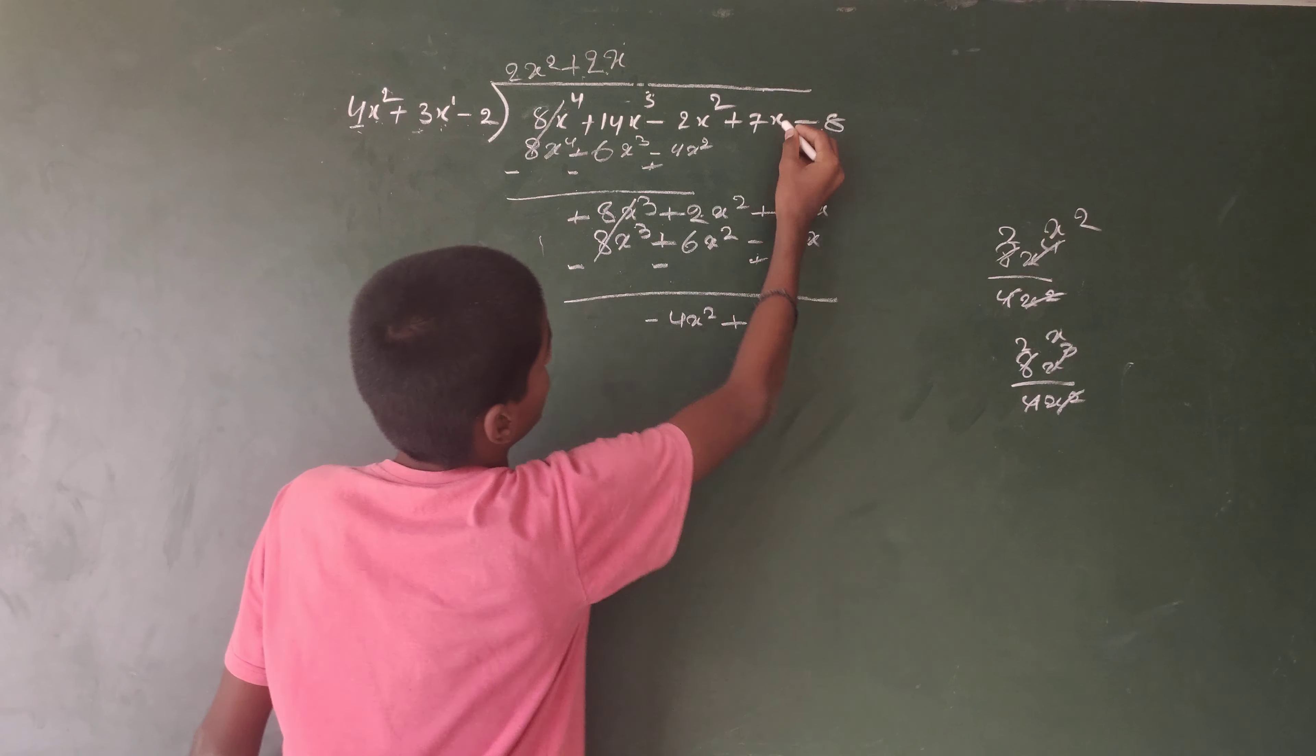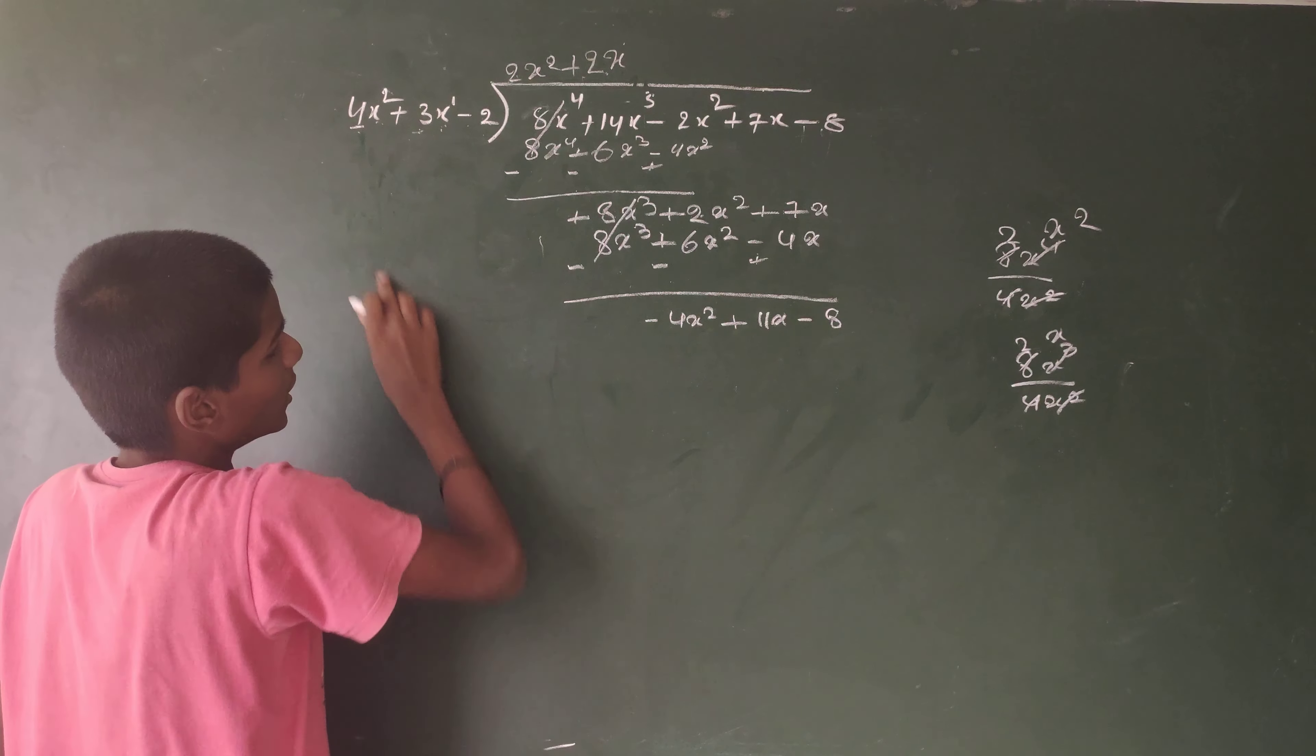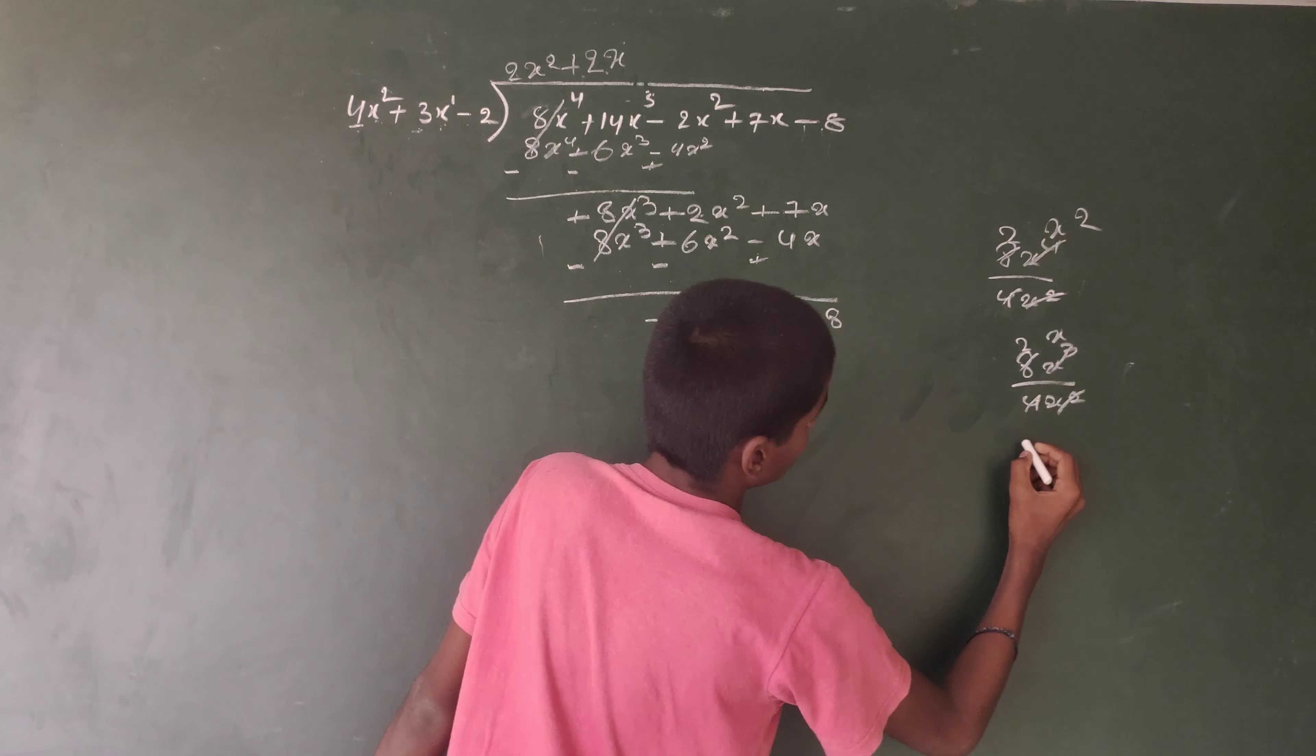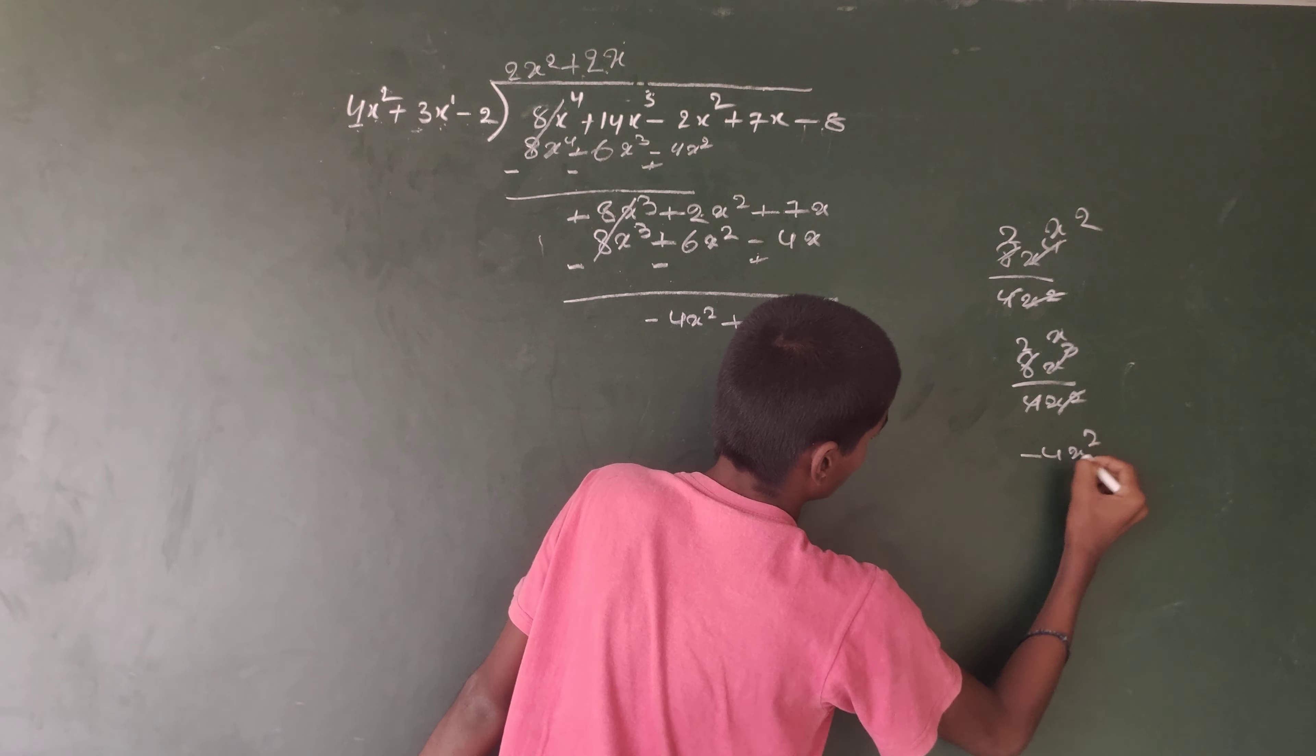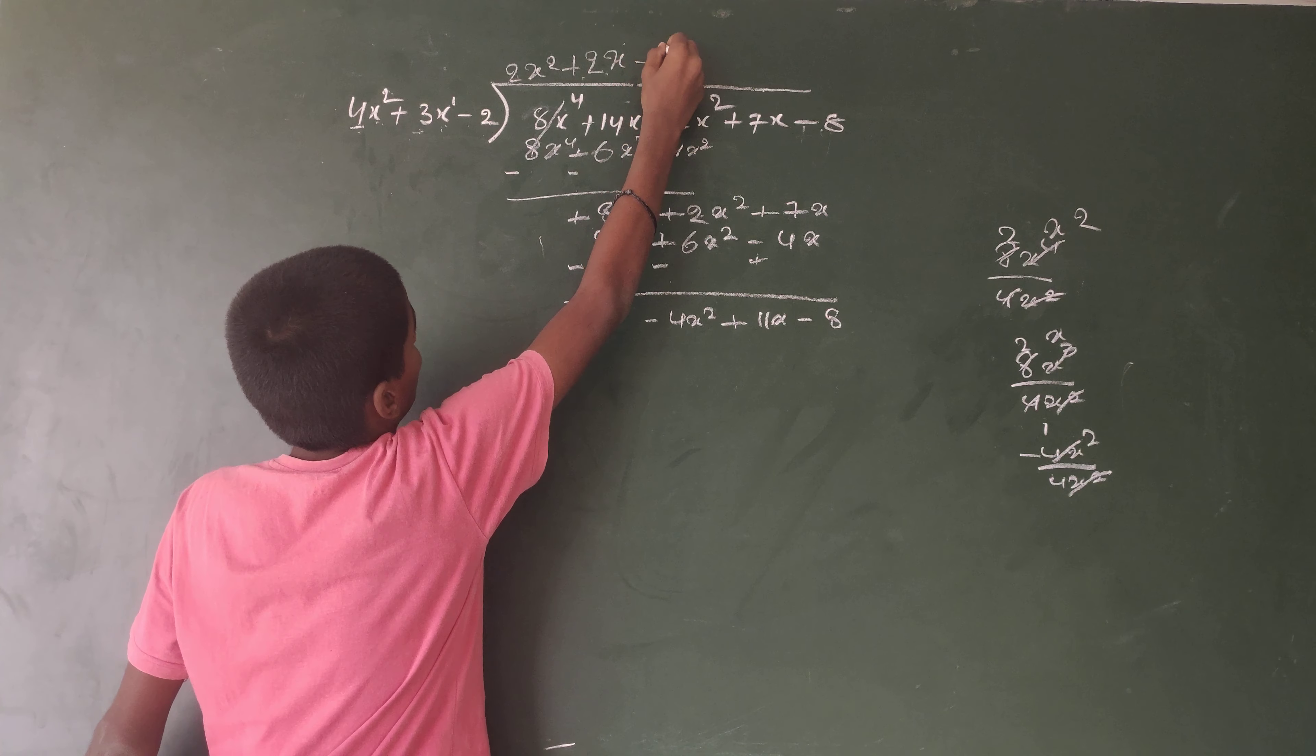Minus 8 bring down terms. Again minus 4x² divided by 4x². This is 1 time. Minus 1.